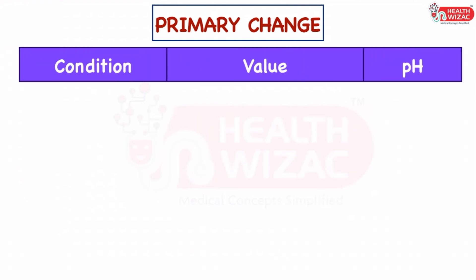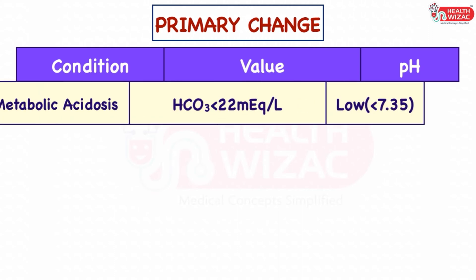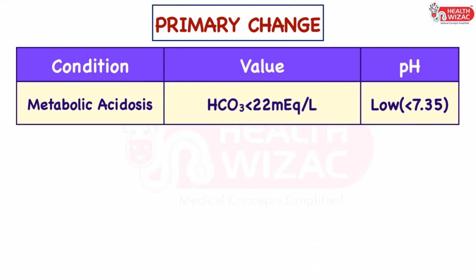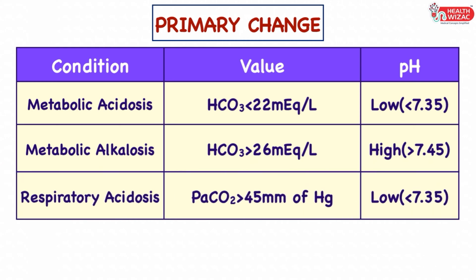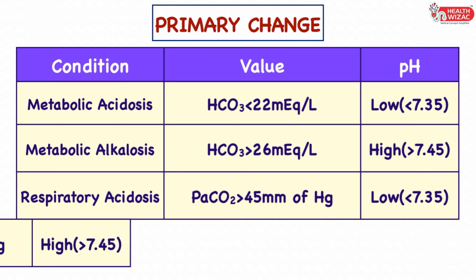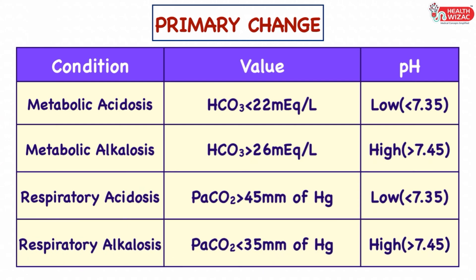Step 3 is to identify the primary change. It can be one of the following: metabolic acidosis, in which pH is less than 7.35 and bicarbonate is less than 22 mEq/L; metabolic alkalosis, in which pH is more than 7.45 and bicarbonate is more than 26 mEq/L; respiratory acidosis, in which pH is less than 7.35 and PaCO2 is more than 45 mmHg; or respiratory alkalosis, in which pH is more than 7.45 and PaCO2 is less than 35 mmHg.